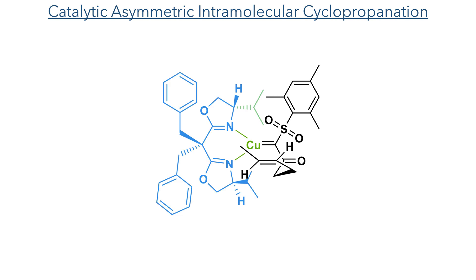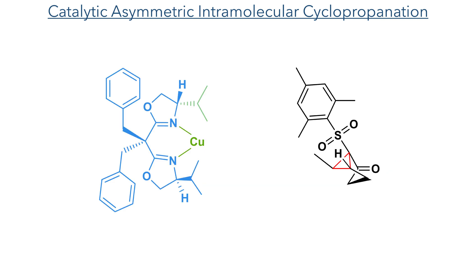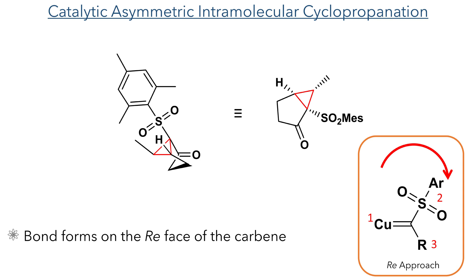In this reaction the box ligand coordinates to the copper to create the chiral environment, and the diazo group is eliminated as dinitrogen to create the copper-bound organometallic intermediate. This allows for the reaction of the alkene and the copper-bound carbon centre, which reacts in a concerted manner by the overlap of the carbon-carbon HOMO orbital and the unoccupied LUMO orbital of the carbene. This forms the cyclopropane ring and allows the copper complex to react further. This insertion proceeded from the re-face of the carbene due to the presence of the chiral ligand, which provided control of the stereochemistry.